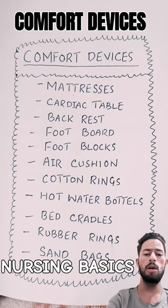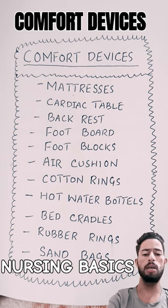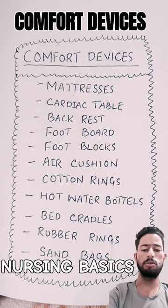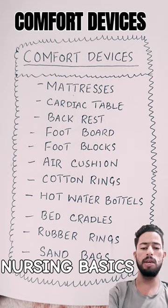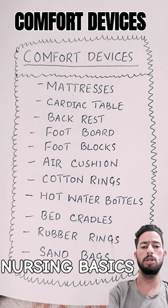The comfort devices are: backrest, foot board, foot blocks, air cushions, cotton rings, hot water bottles, bed cradles, rubber rings, and sandbags. I hope you understood about the comfort devices.